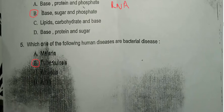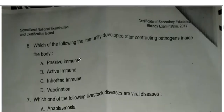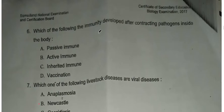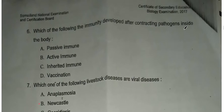Which of the following immunity is developed after contracting pathogens inside the body? After contracting pathogens, the immune system responds — this is active immunity.